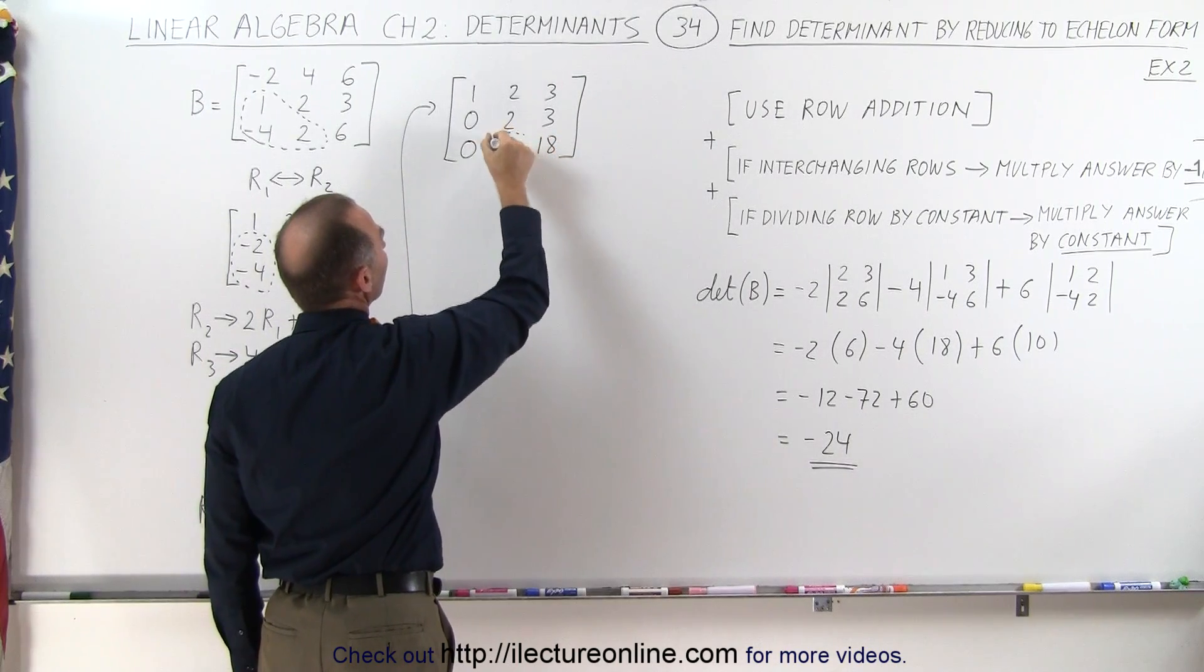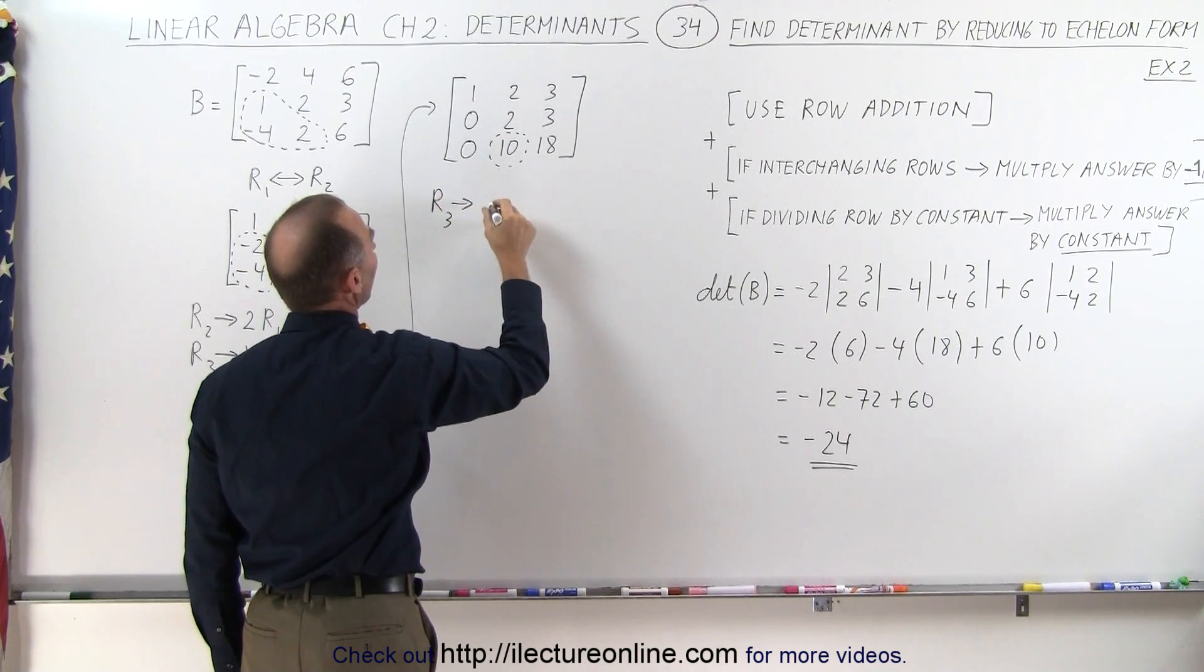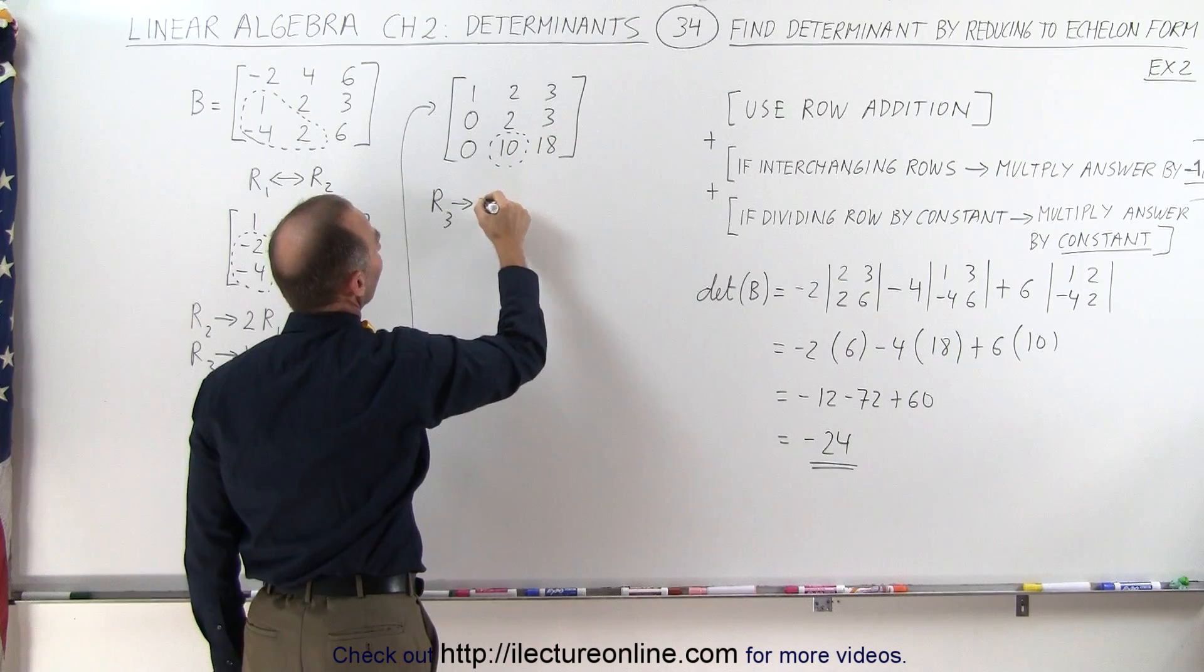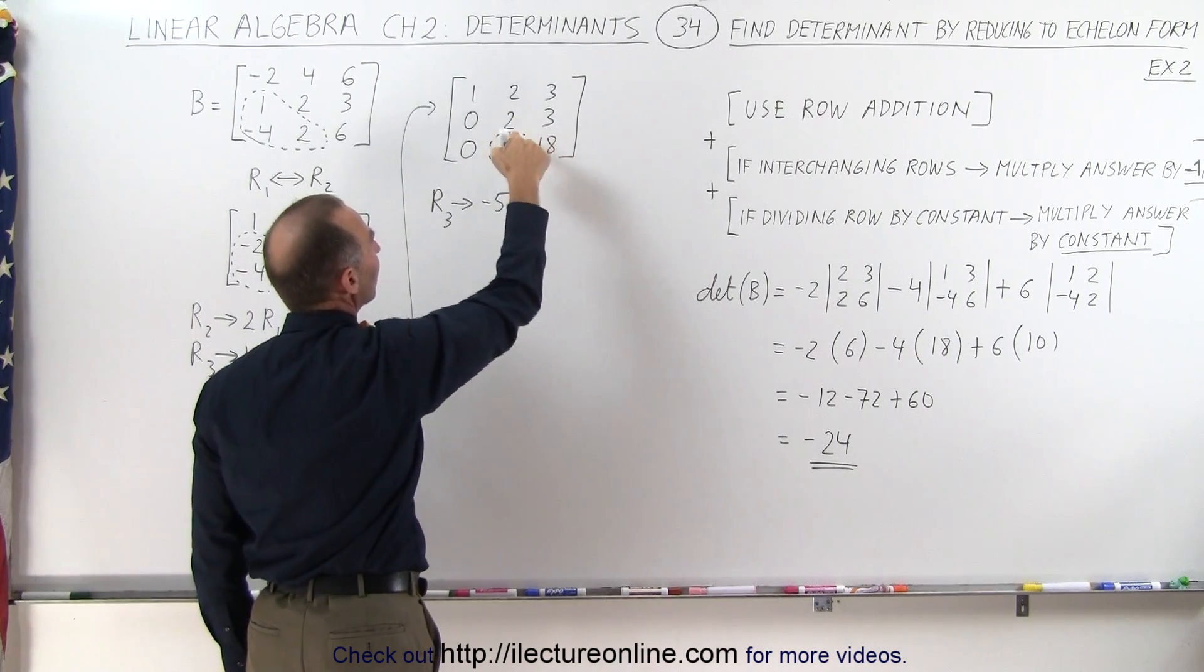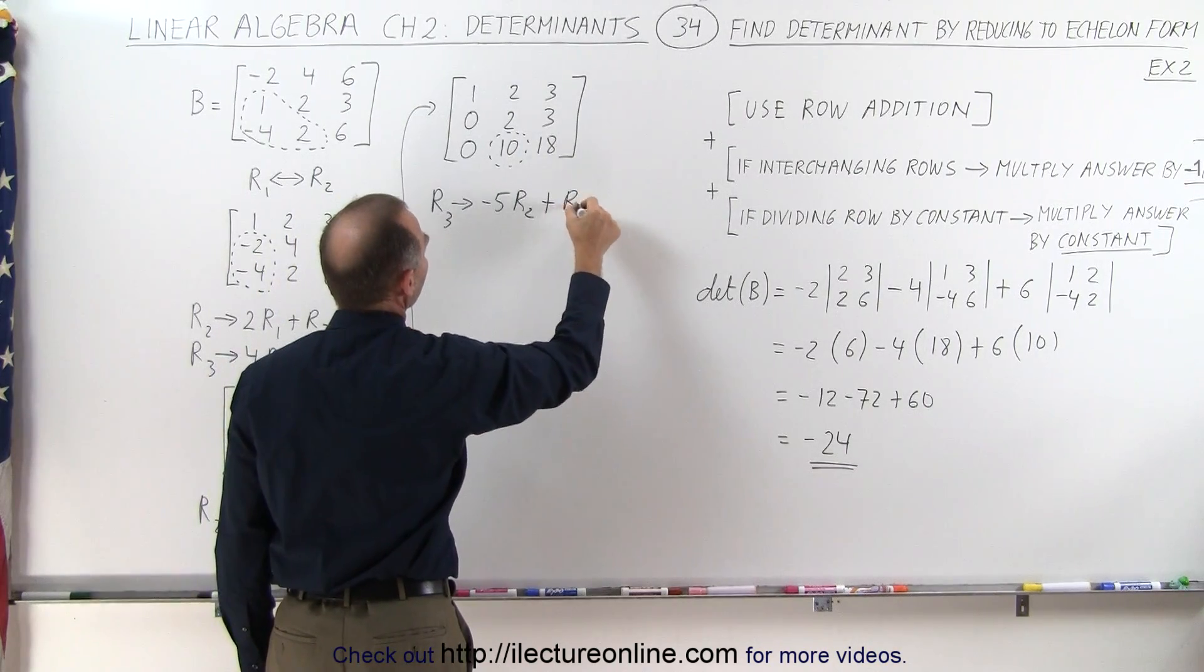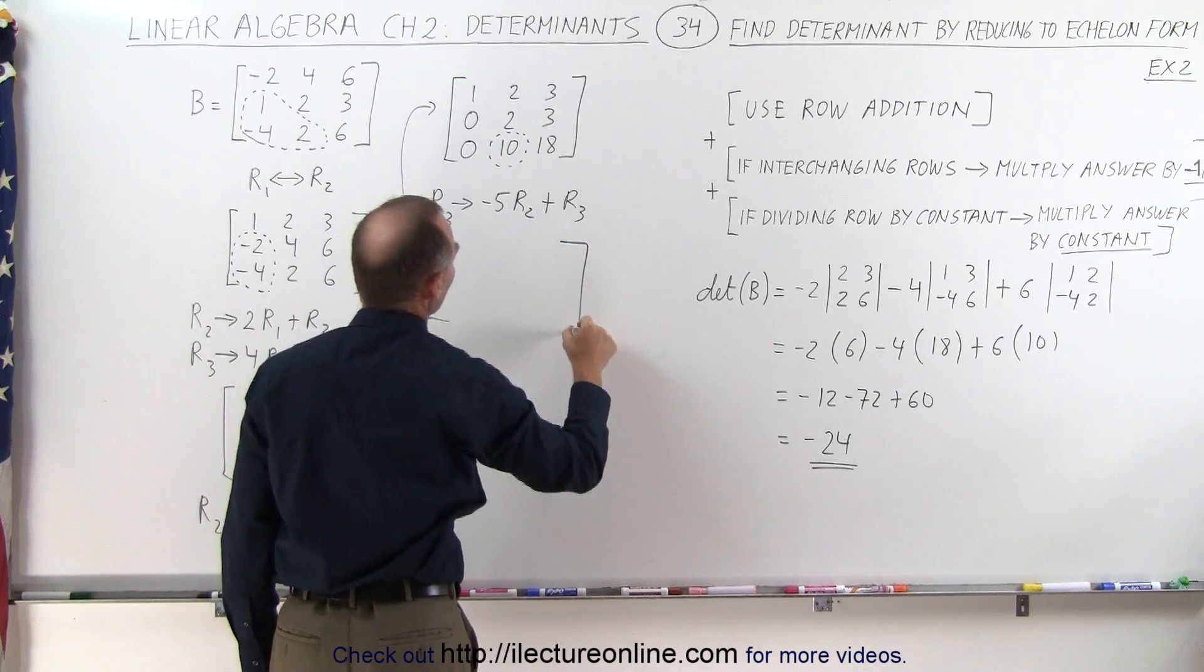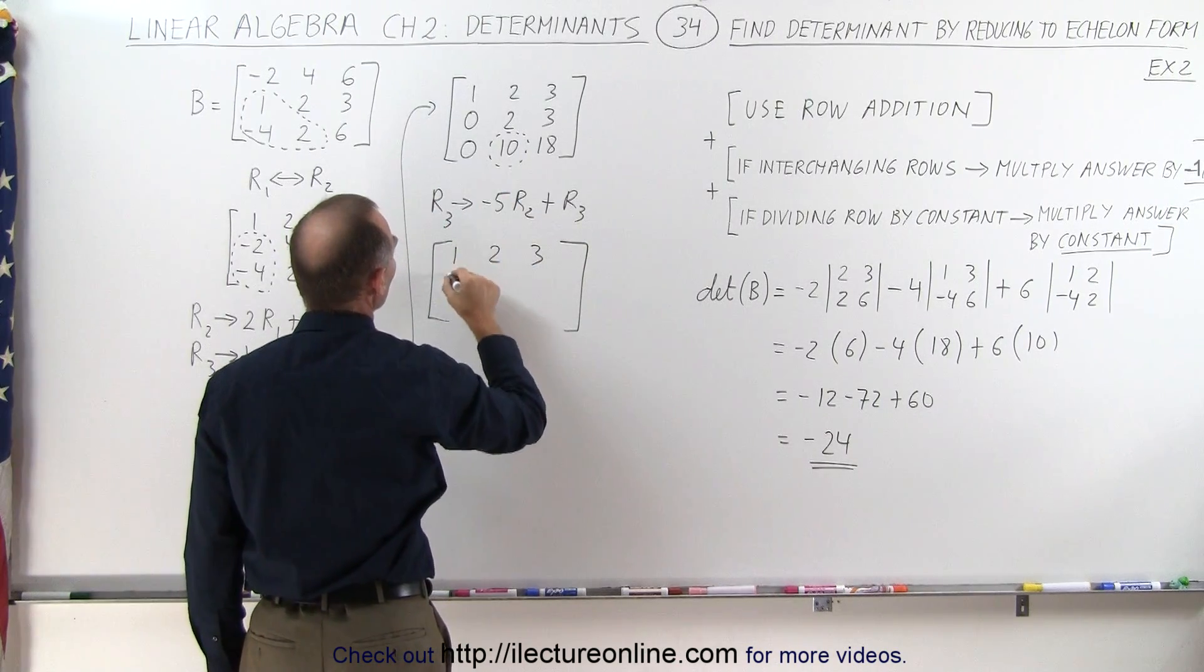Since we want to get rid of this 10 right here, that can be accomplished by taking the third row and replacing it by negative 5 times the second row, because negative 5 times 2 is negative 10, add it to 10, and you get 0. So you're going to add that to the third row. When you do that, you get the following matrix. The first row did not change. The second row did not change.